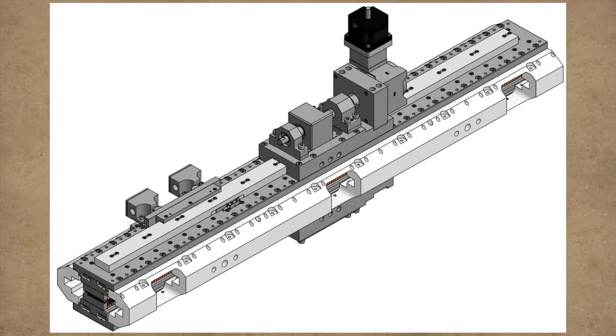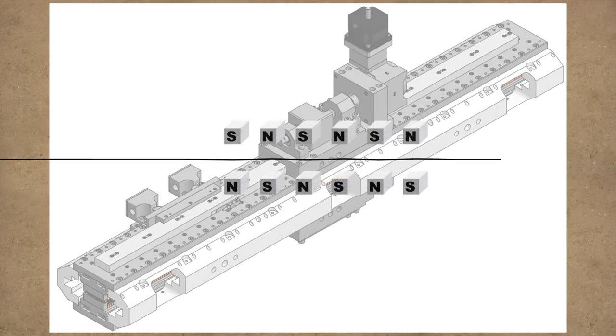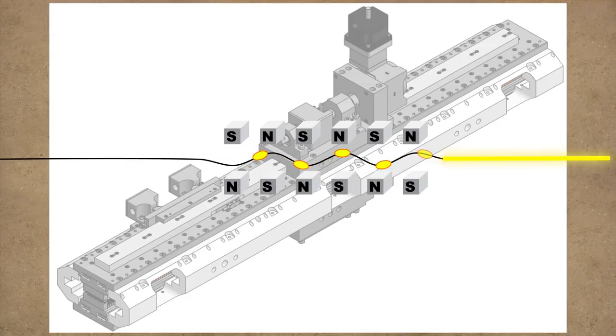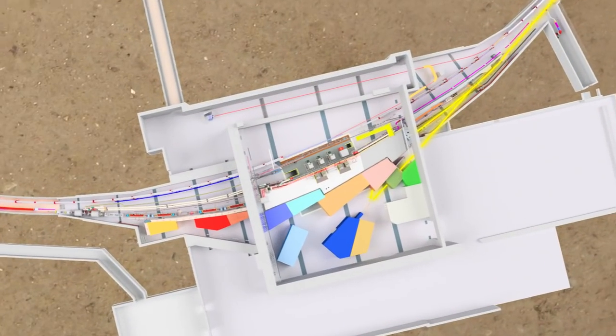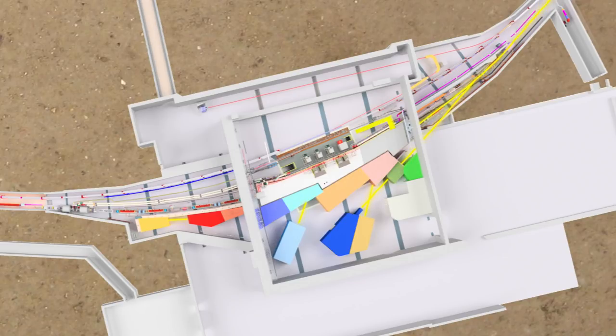Special magnets called undulators subtly disrupt the path of the positrons as they travel through CESAR. This disruptive process results in the emission of an intense beam of light. The light, in the form of X-rays, is directed down a separate beamline while the positrons continue around the storage ring.